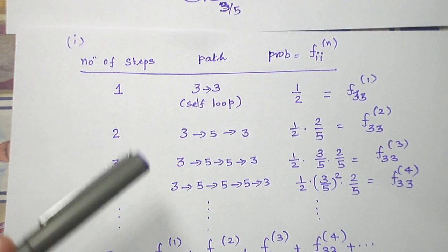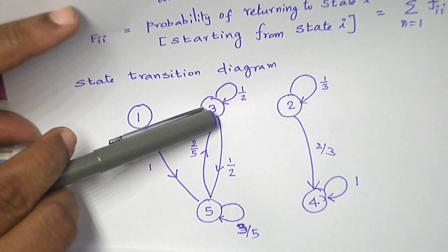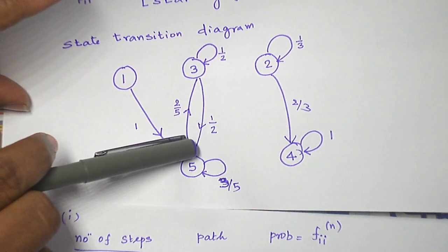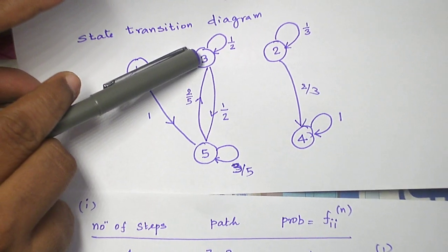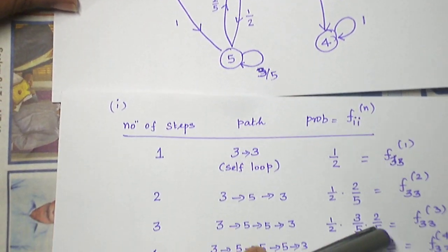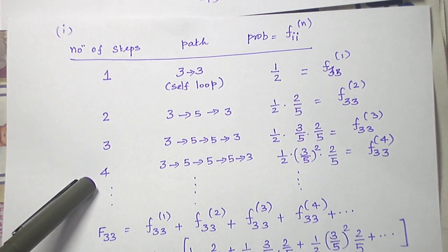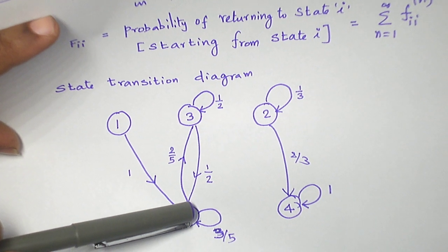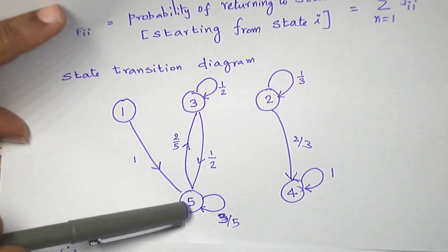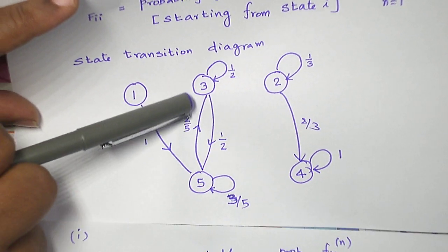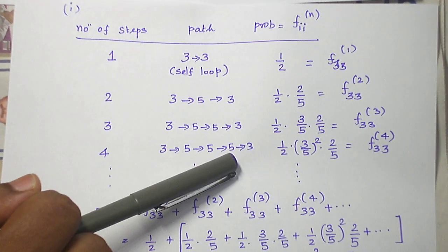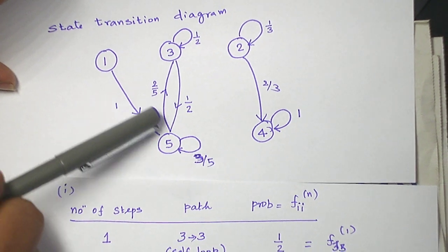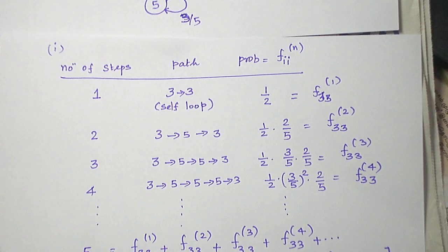Three to three in three steps: the path is three to five (first step), five to five (second step), five to three (third step). The probability is one by two times three by five times two by five. In four steps the path extends similarly. So the pattern becomes one by two times (three by five) squared times two by five, and it goes on infinitely.